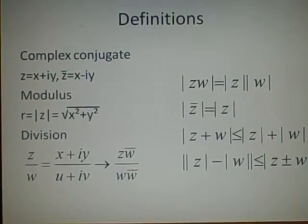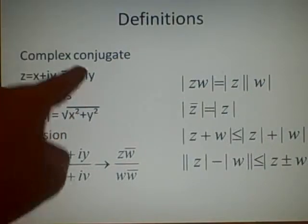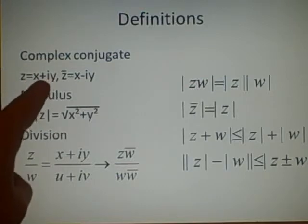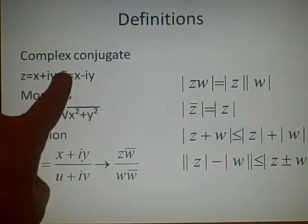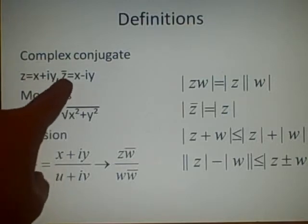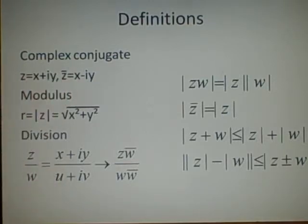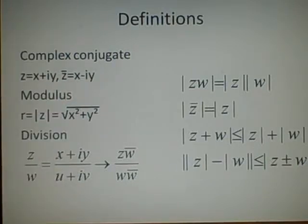Now, the complex conjugate. This is useful for division. All it is, is we reverse the sign in front of the i. So if we have a plus, we change it to a minus, and we denote this with a bar on top of our letter z. So where z is x plus iy, the conjugate is x minus iy.